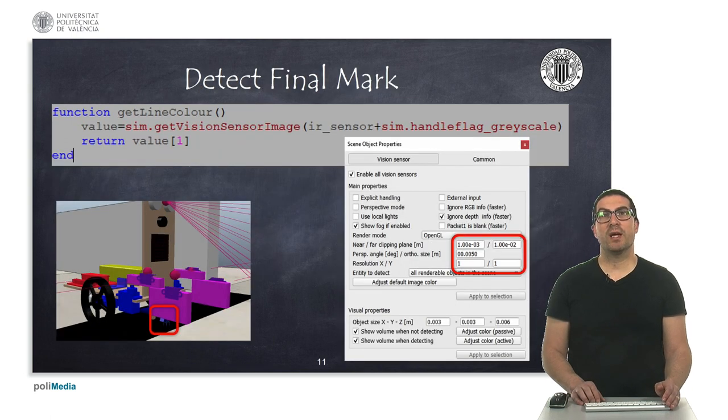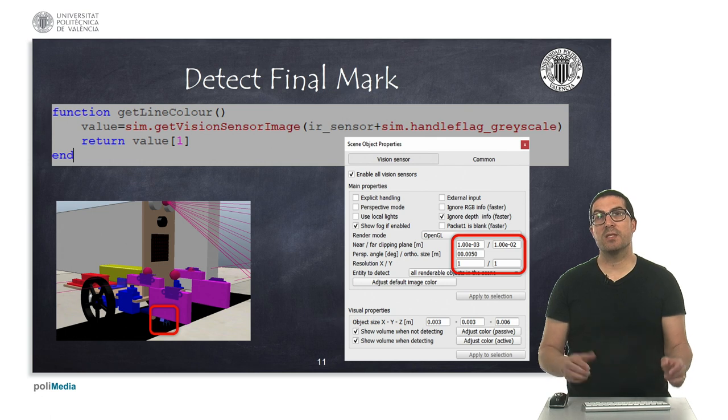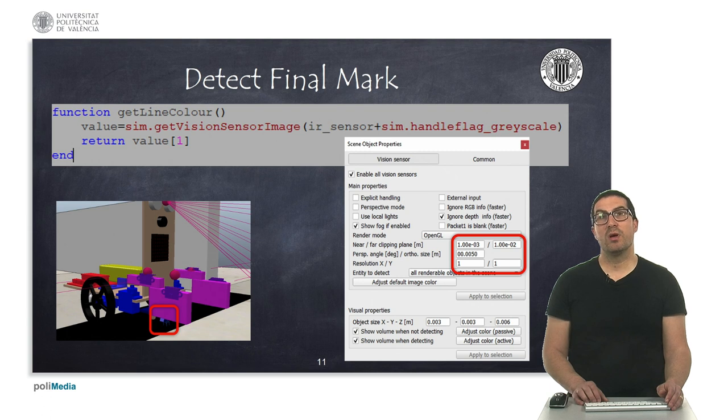Finally, in order to detect the mark that indicates that we have reached the exit of the maze, we will use an orthogonal vision sensor with a single pixel resolution that will emulate the TCRT5000 infrared sensor. This sensor is pointing towards the ground, towards the floor, and its configuration is the same that we used in the line tracking video.